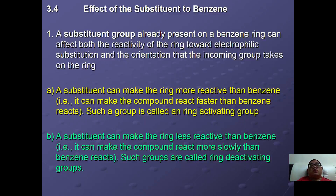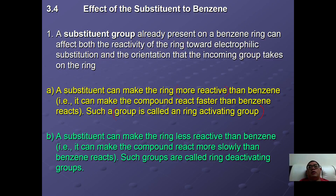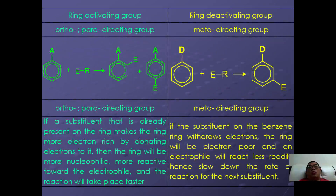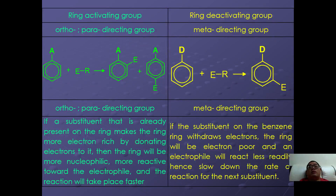Next, we look at the effect of substituents on the benzene ring. A substituent already present in the benzene ring can affect the reactivity of the ring toward electrophilic substitution reactions. A substituent can make the ring more reactive than benzene — such groups are known as ring-activating groups — or it can make the ring less reactive than benzene, slowing the rate of reaction, and such groups are known as ring-deactivating groups.